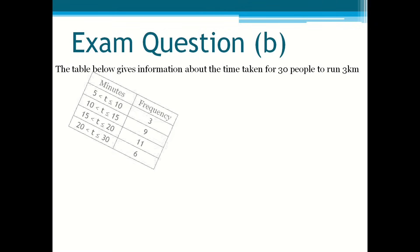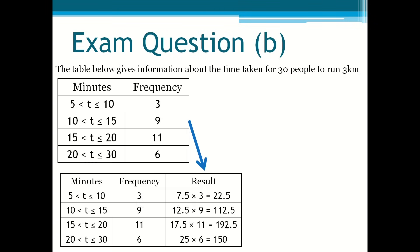So you multiply them so you get your results. So 7.5 times by 3. 12.5 times by 9. 17.5 times by 11. And 25 times by 6.